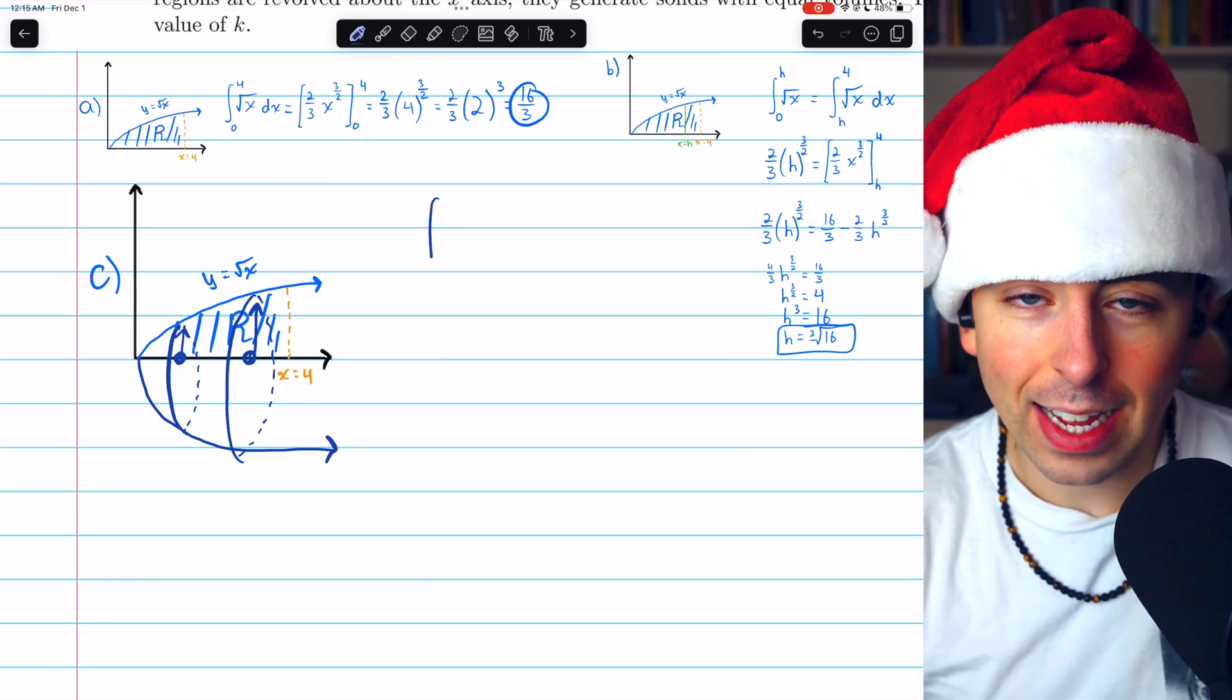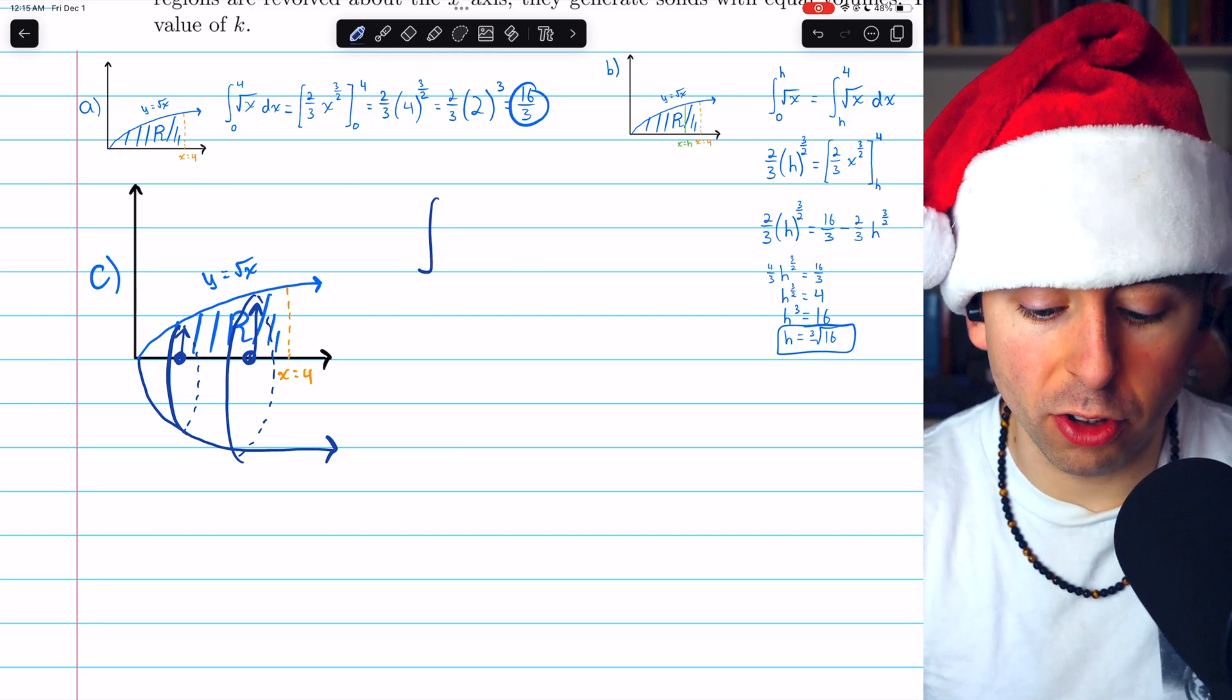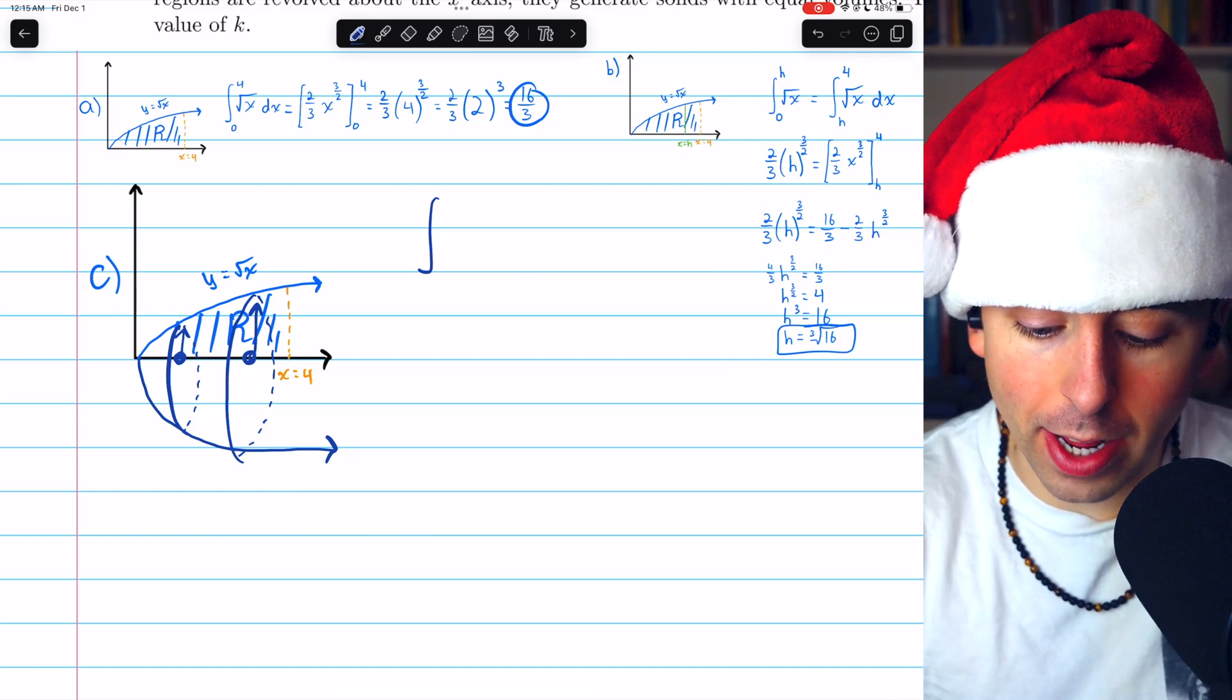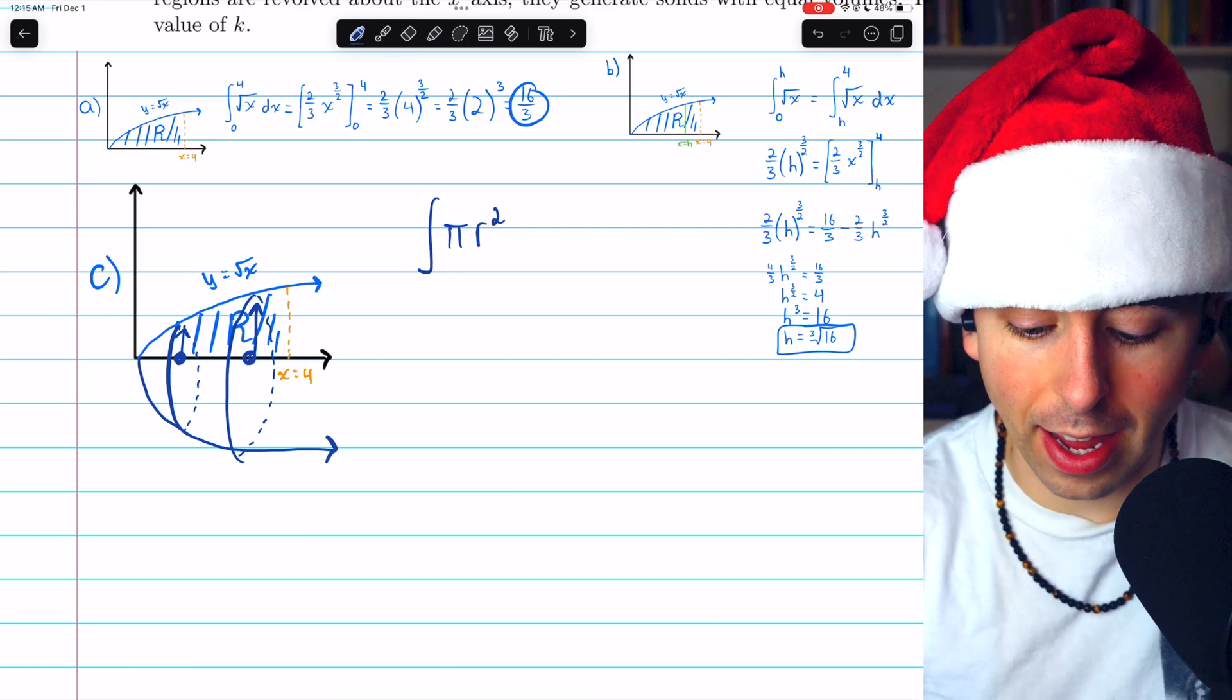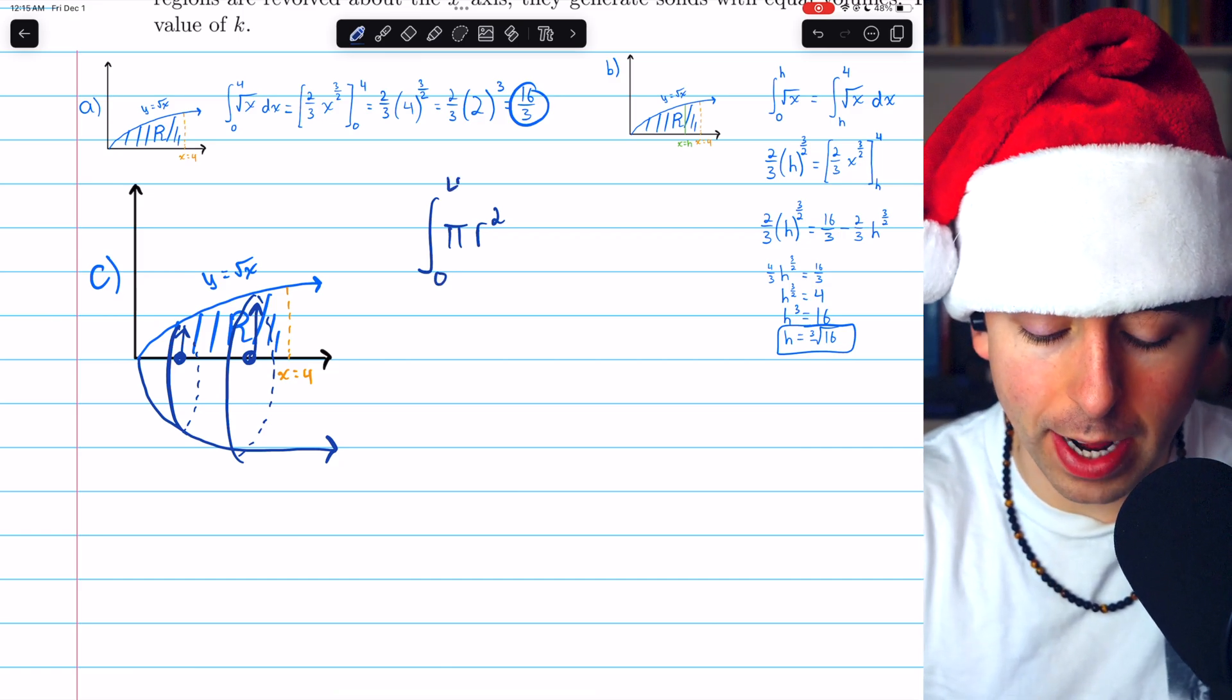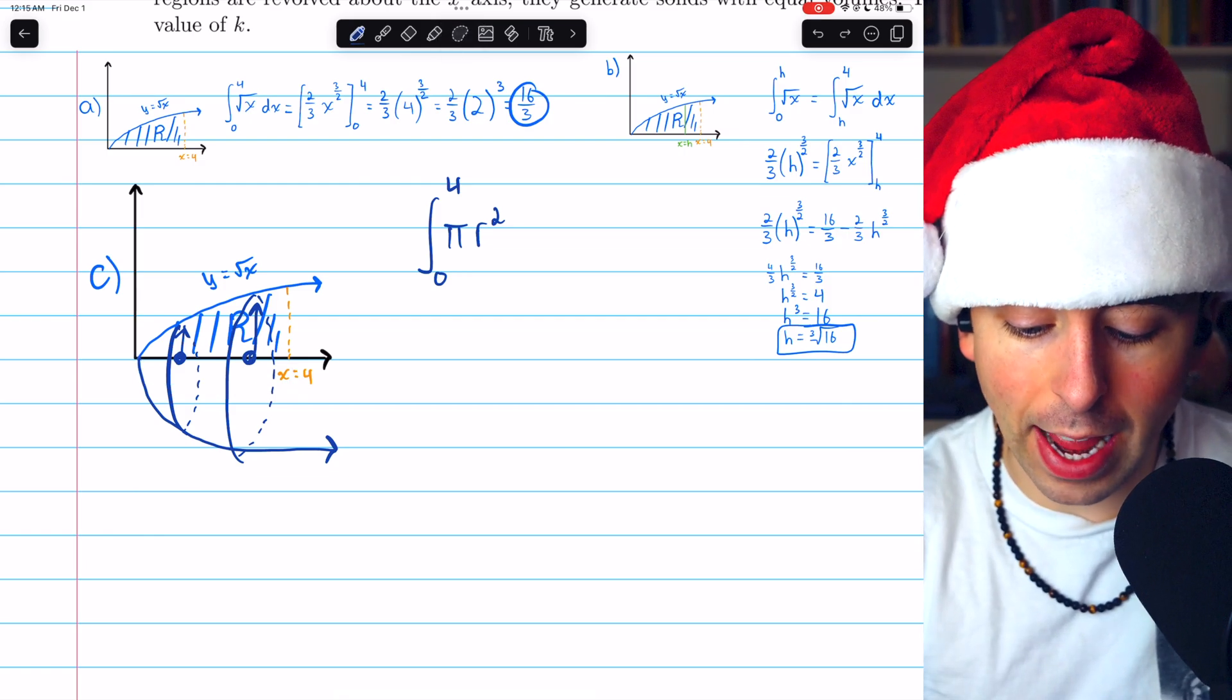What we're doing is adding up infinitely many circles, which is why in this type of situation, we have to integrate pi R squared from, in this case, 0 to 4, right? From X equals 0 out to 4.